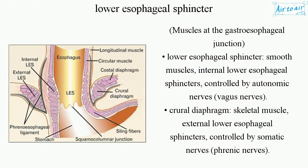Muscles at the gastroesophageal junction — Lower esophageal sphincter: smooth muscle, internal lower esophageal sphincter, controlled by autonomic nerves (vagus nerves). Crural diaphragm: skeletal muscle, external lower esophageal sphincter, controlled by somatic nerves (phrenic nerves).